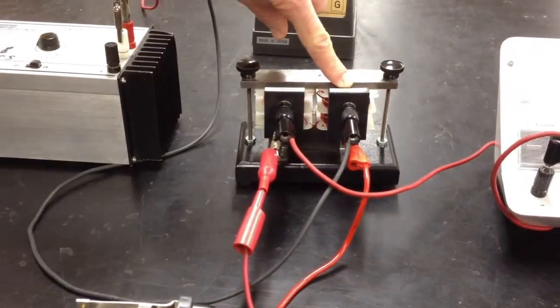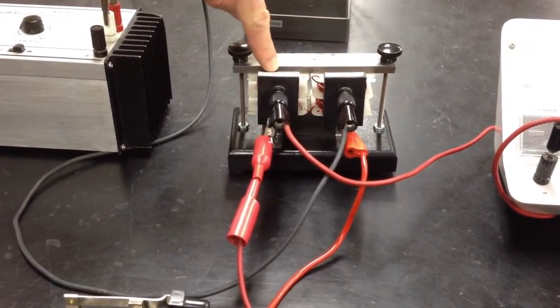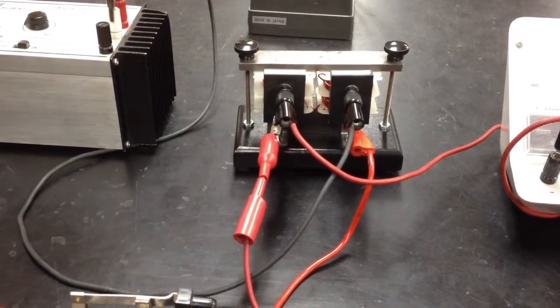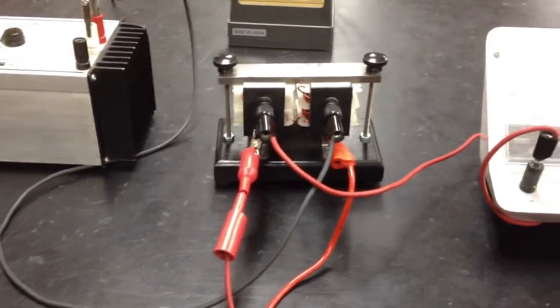You should be noticing that the needle is deflecting much more than it did last time. And the reason for this is because this time the primary circuit has a smaller number of turns, 110, than the secondary.